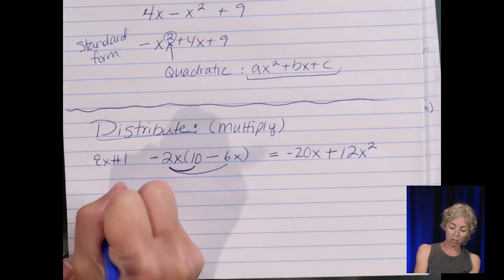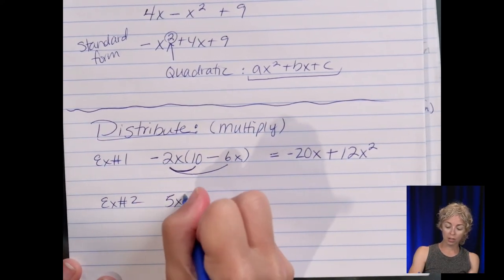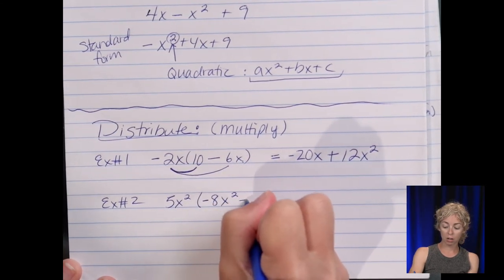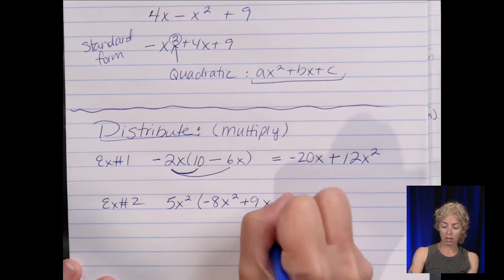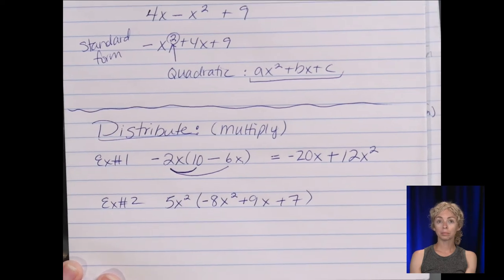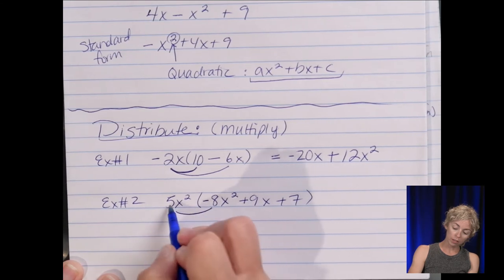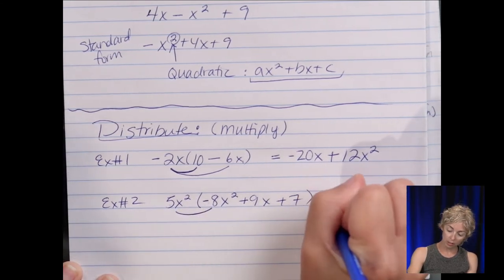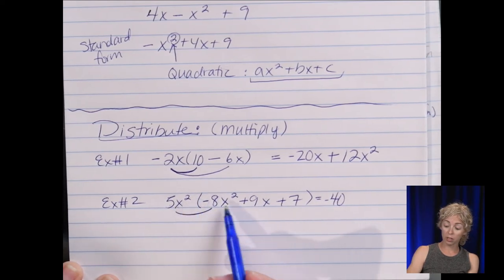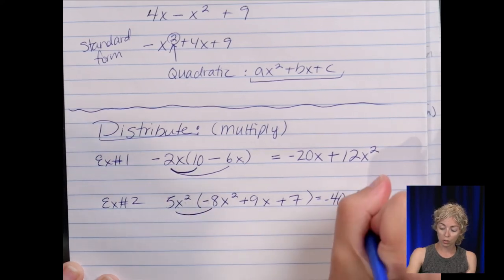So there's example number one. Let's make it a little bit more challenging and just add more terms. So example number two. Let's say five x squared times negative eight x squared plus nine x plus seven. So again, distribute it. Go slow. Five times negative eight is a negative forty. And then x squared times x squared. We keep the base x and add the exponent. So two plus two, four.